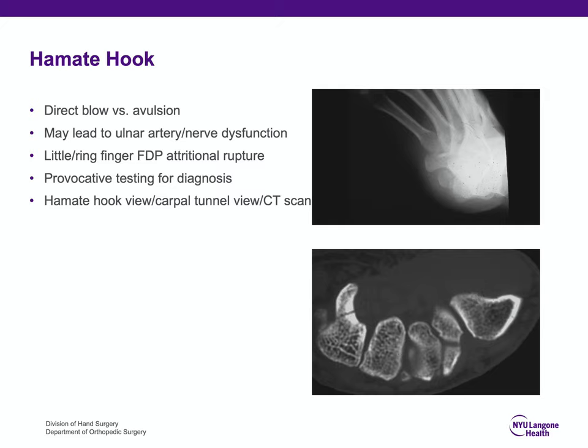The little and ring finger profundus tendons are also adjacent to the hamate hook. There is a provocative test where the wrist is held in ulnar deviation and the examiner asks the patient to flex the little and ring finger DIP joints. Pain elicited with this maneuver is oftentimes diagnostic for a hamate hook fracture.